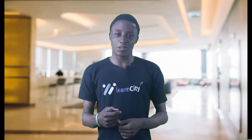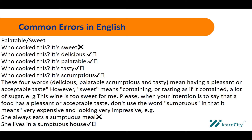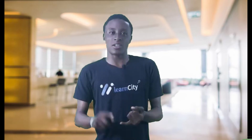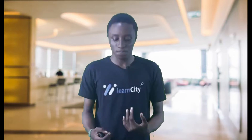The next topic is words like 'palatable,' 'sweet,' 'delicious,' and 'tasty.' When someone wants to praise food, they might say 'who cooked this? It is sweet!' — but that statement is not grammatically correct in that context. You could say 'it is delicious,' 'it is palatable,' 'it is tasty,' or 'it is sumptuous.' The words delicious, palatable, sumptuous, and tasty all mean having a pleasant or acceptable taste.